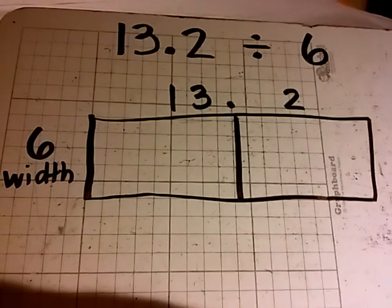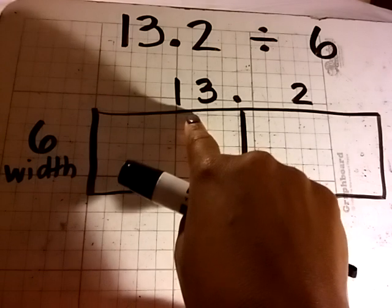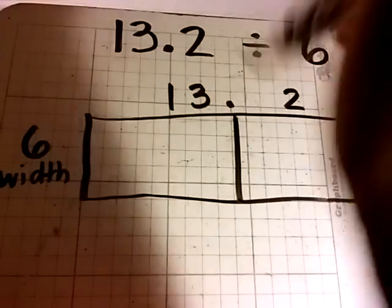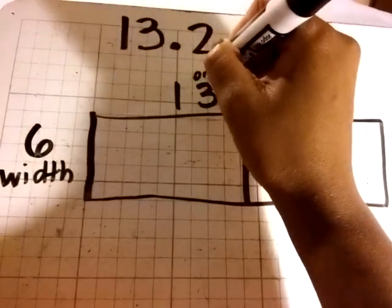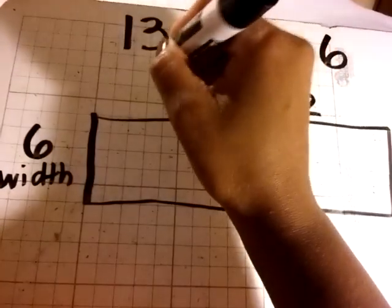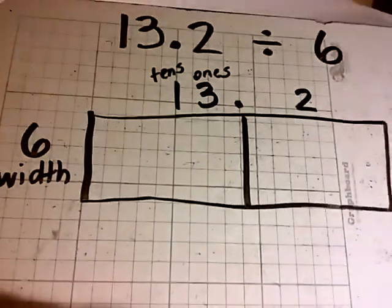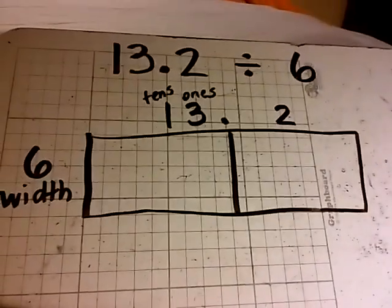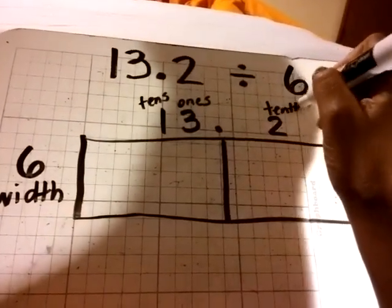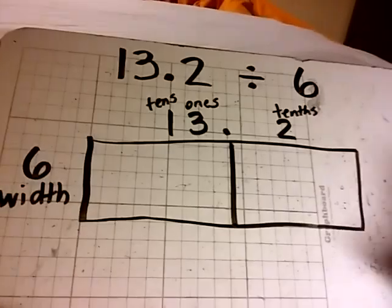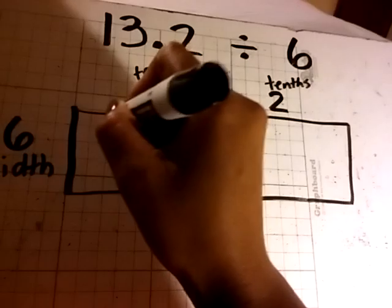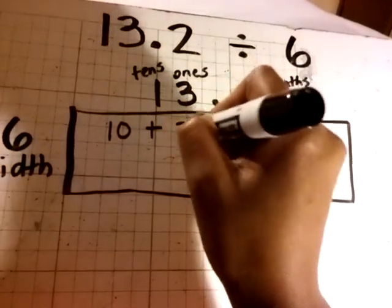Now we can start by decomposing 13 using our place value knowledge. The 3 in 13 is in the ones place. The 1 in 13 is in the tens place and the 2 is in the tenths place. We can decompose 13 as 10 plus 3.